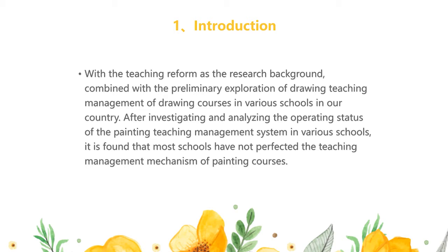However, the management scope of this method has certain limitations with the rapid development of painting courses. Based on this, through analysis and research combined with artificial intelligence technology, the painting teaching management system is optimized to reduce the learning pressure of teachers and students, encourage students' enthusiasm in the learning process, cultivate students' active participation and initiative, let students actively understand and explore, increase the emotional communication between teachers and students, so as to promote the coordinated progress of the entire teaching process.